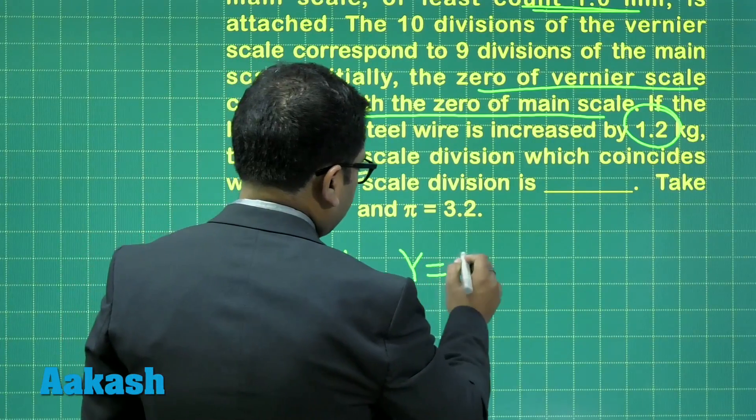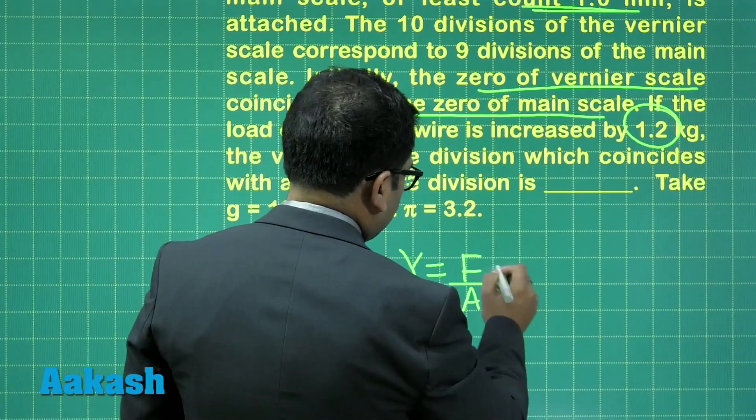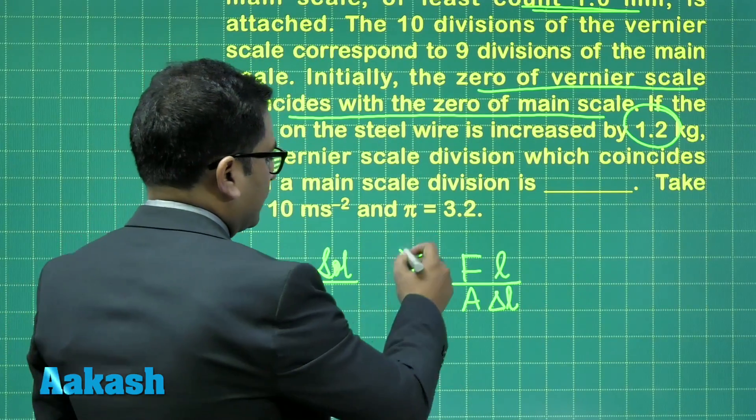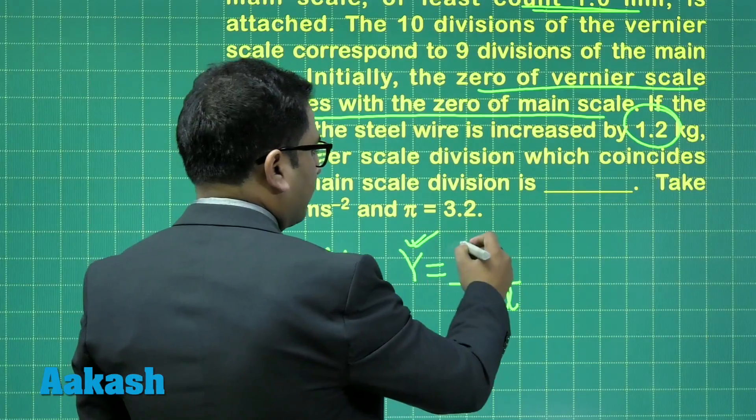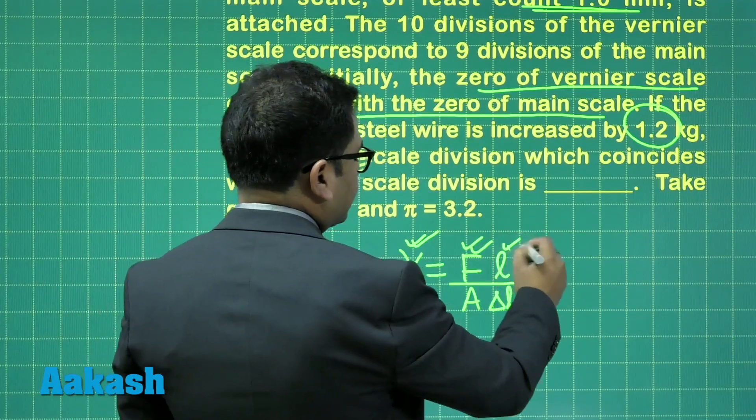Young's modulus is F by A times delta L divided by L. That's how it goes. Now here's the Young's modulus. F is the additional force, 1.2 kg. The length is given as 1 meter.